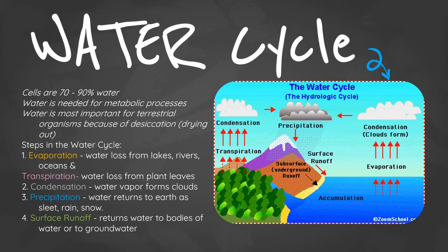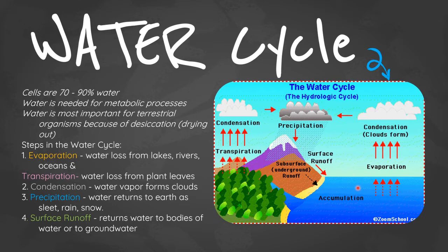We're first going to look at the water cycle. Remember, cells are about 70 to 90 percent water, meaning our cells are mostly made up of water. It's needed for important metabolic processes in the body and is especially important to land creatures because of the risk of drying out. In the water cycle, evaporation is where water is lost from lakes, rivers, and oceans — the movement of water as a liquid to vapor.